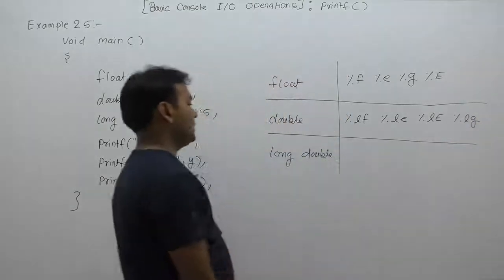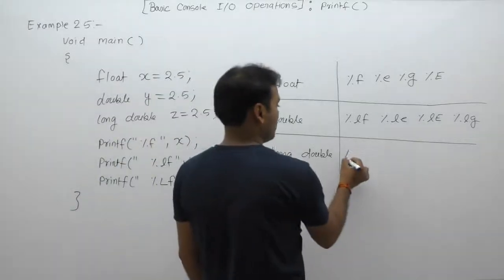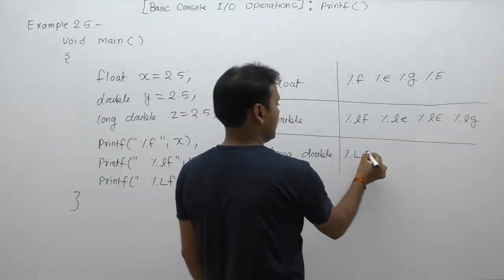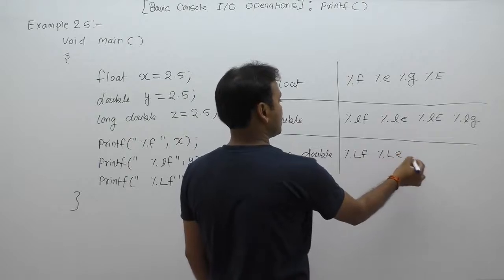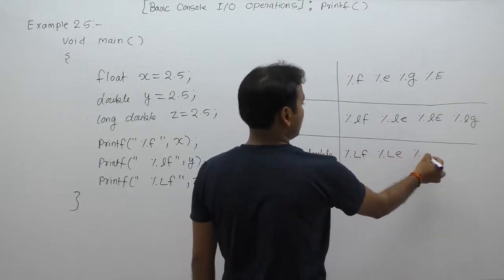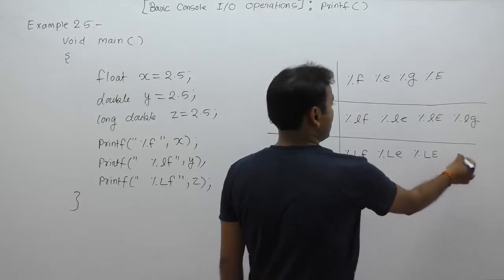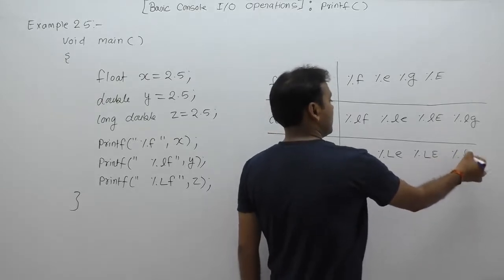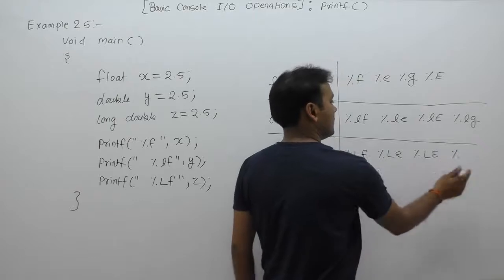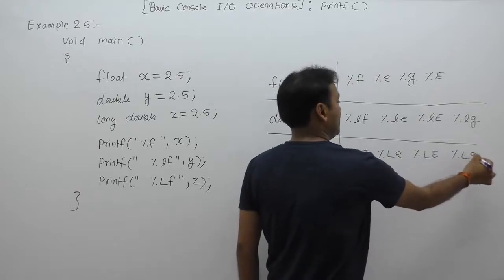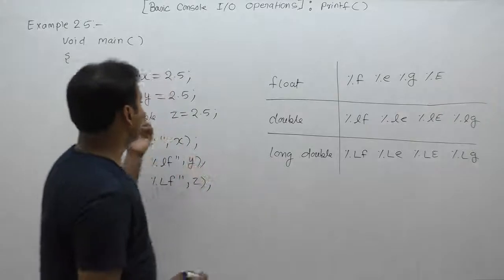Format specifiers for long double are %Lf, %Le, %LE, %Lg. The 'g' may be uppercase or lowercase. What is the result of this example?